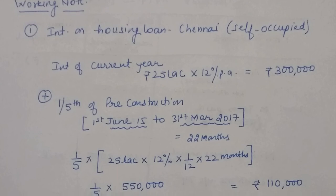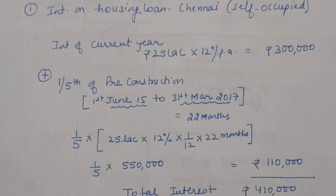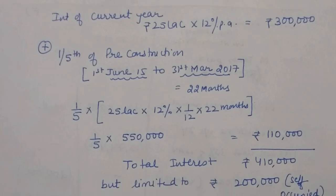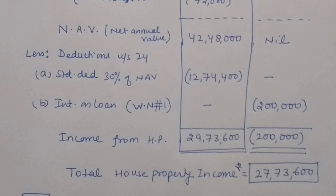Pre-construction interest is allowed in 5 equal installments starting from the year the house is completed. The house was completed in 17-18, and our current year is 18-19, so this is the second year — well within the 5-year window. The 1/5th installment of pre-construction interest, which comes to approximately 1,10,000 rupees, is added to the current year's interest. Calculate the total interest, but since it exceeds 2,00,000, only 2,00,000 will be allowed.